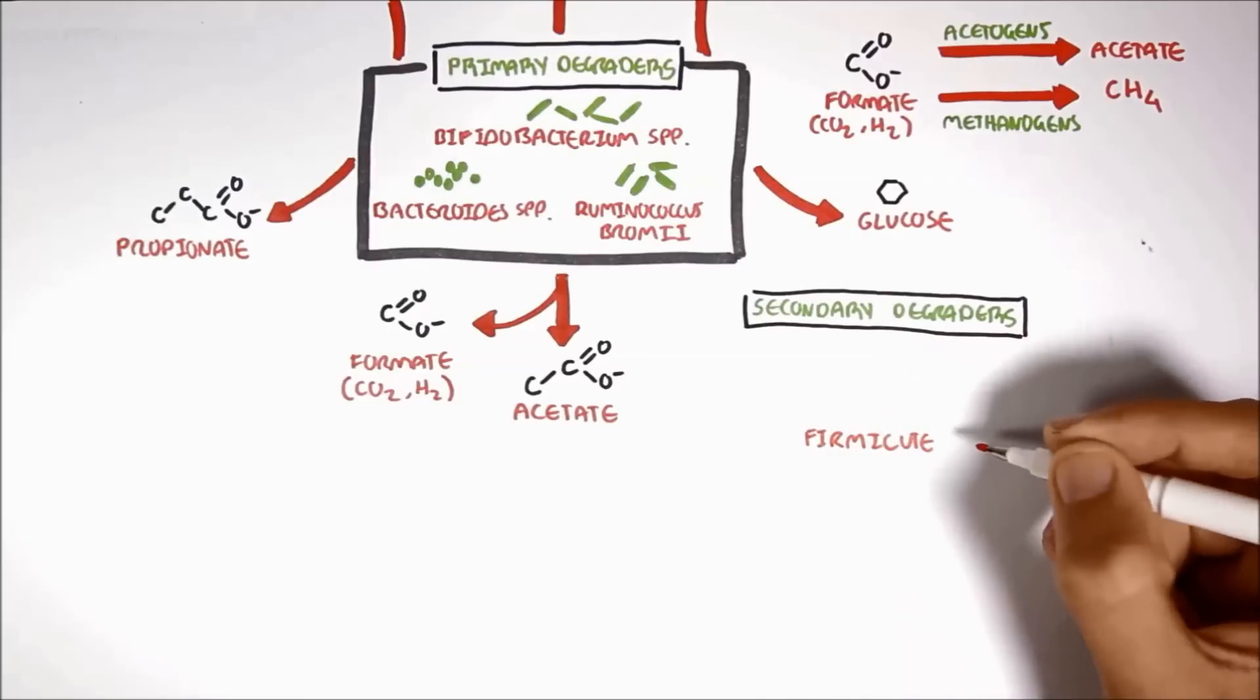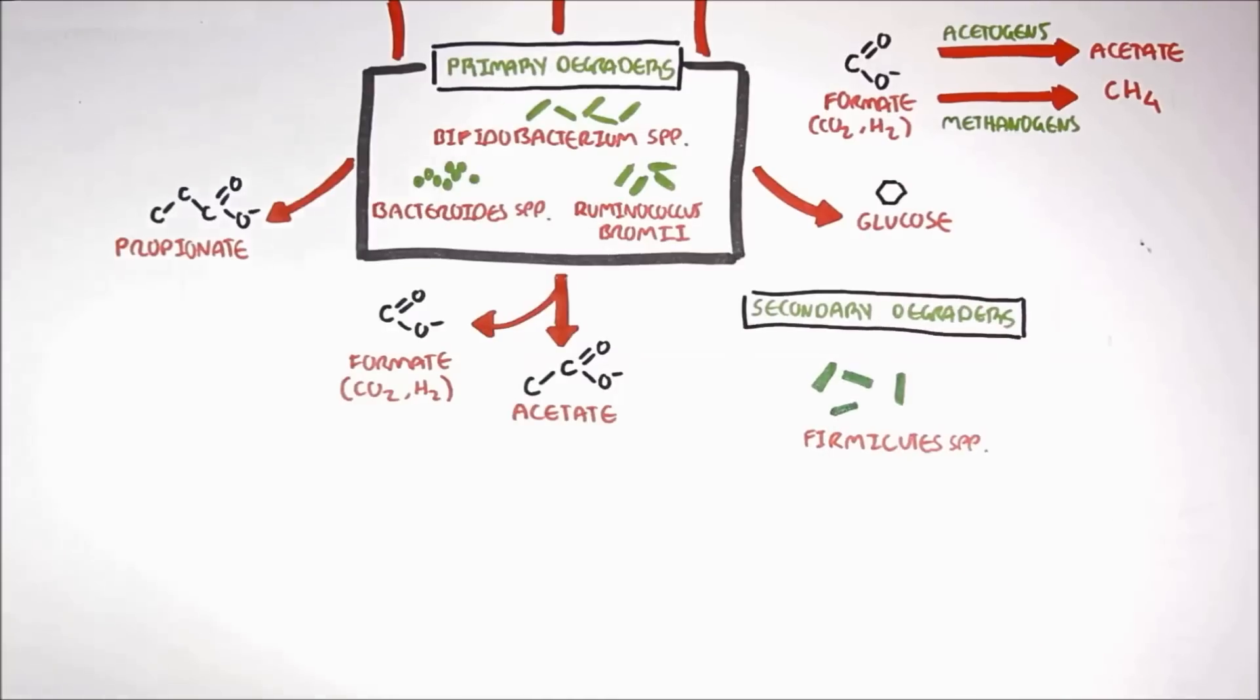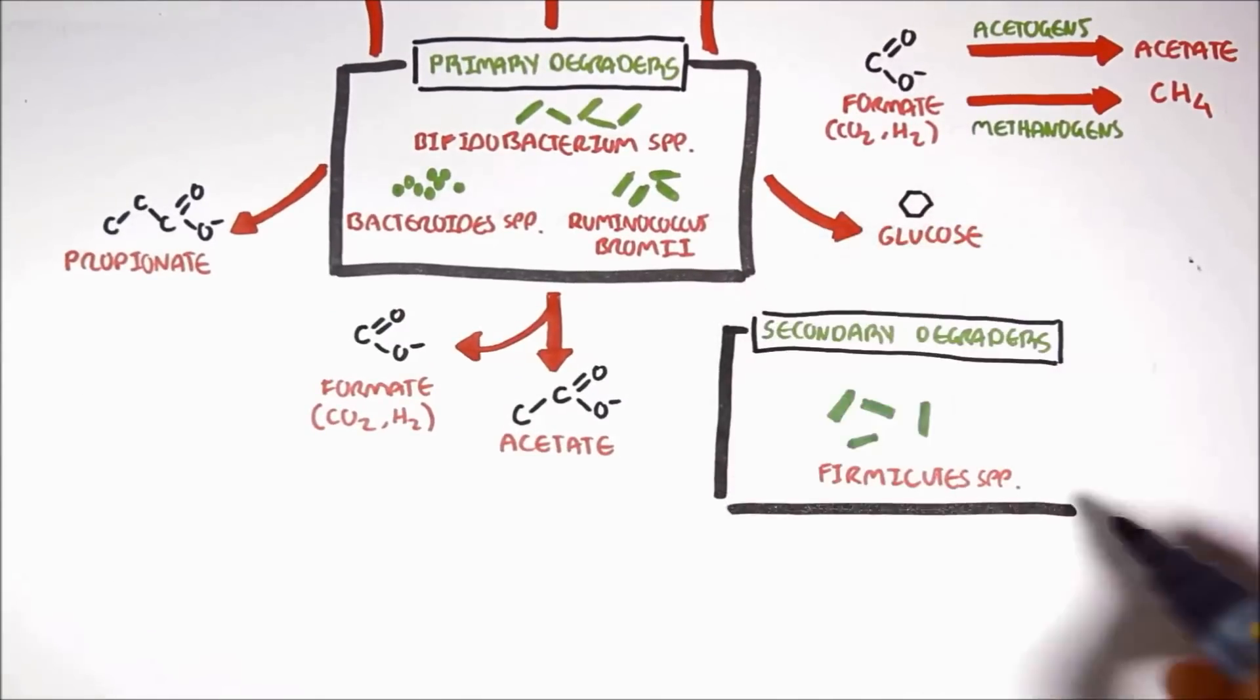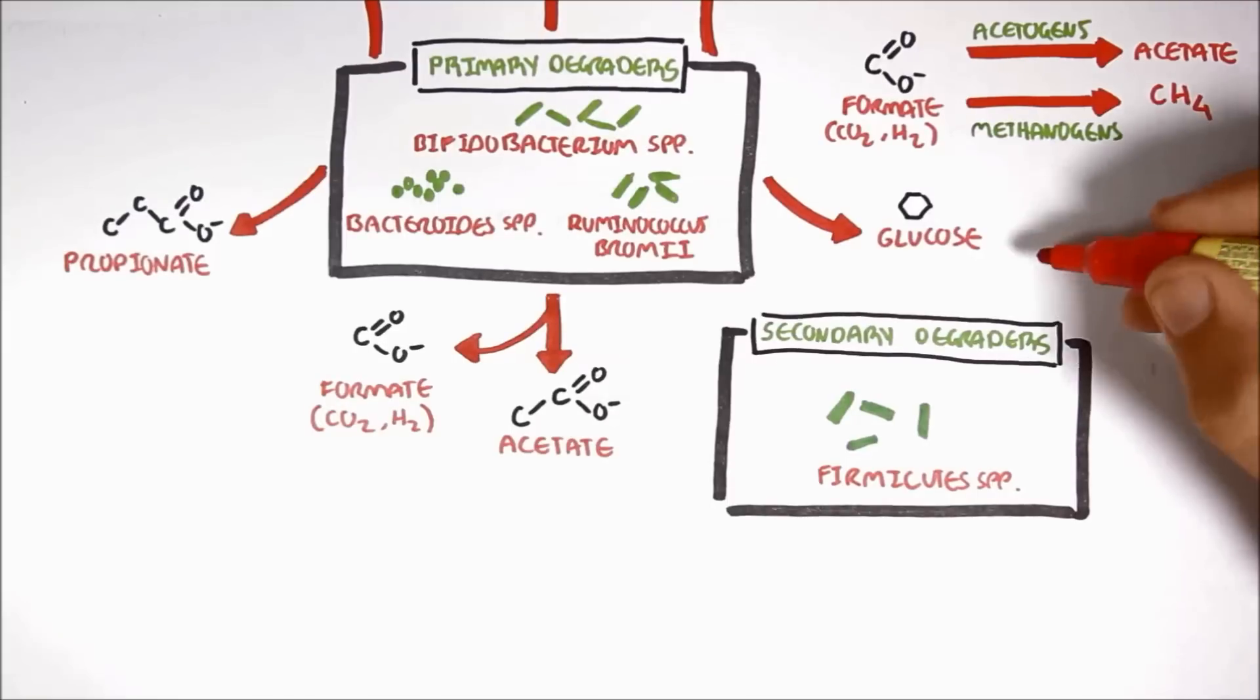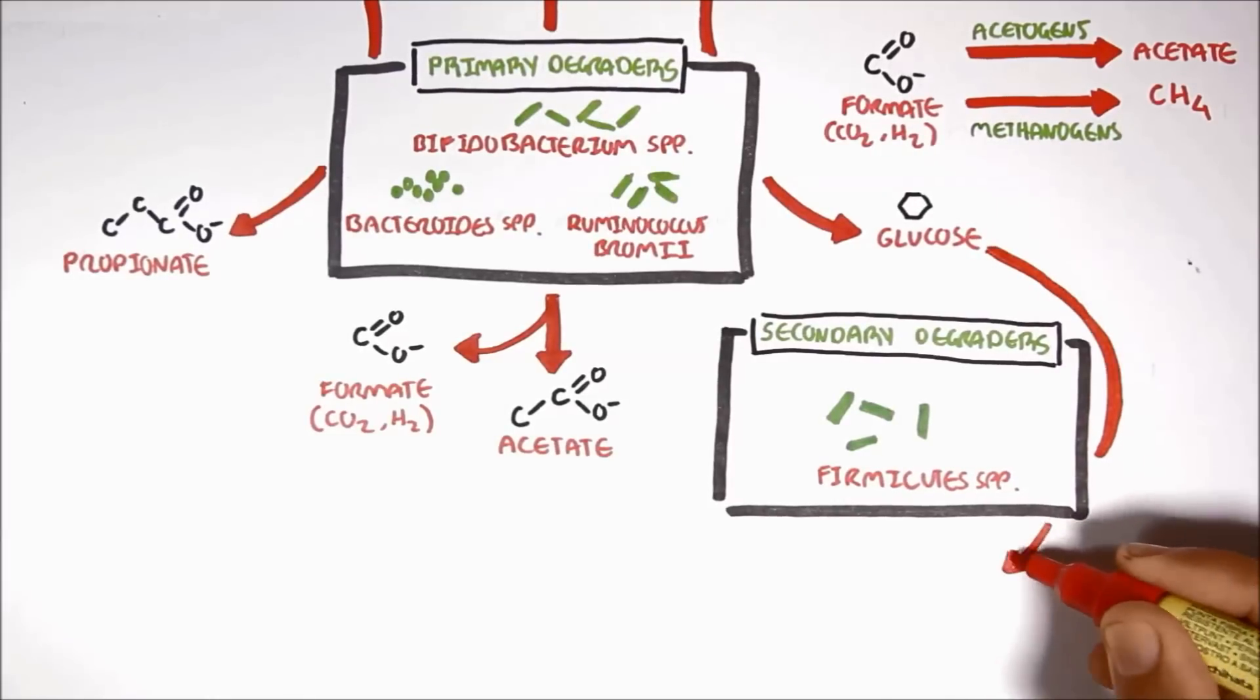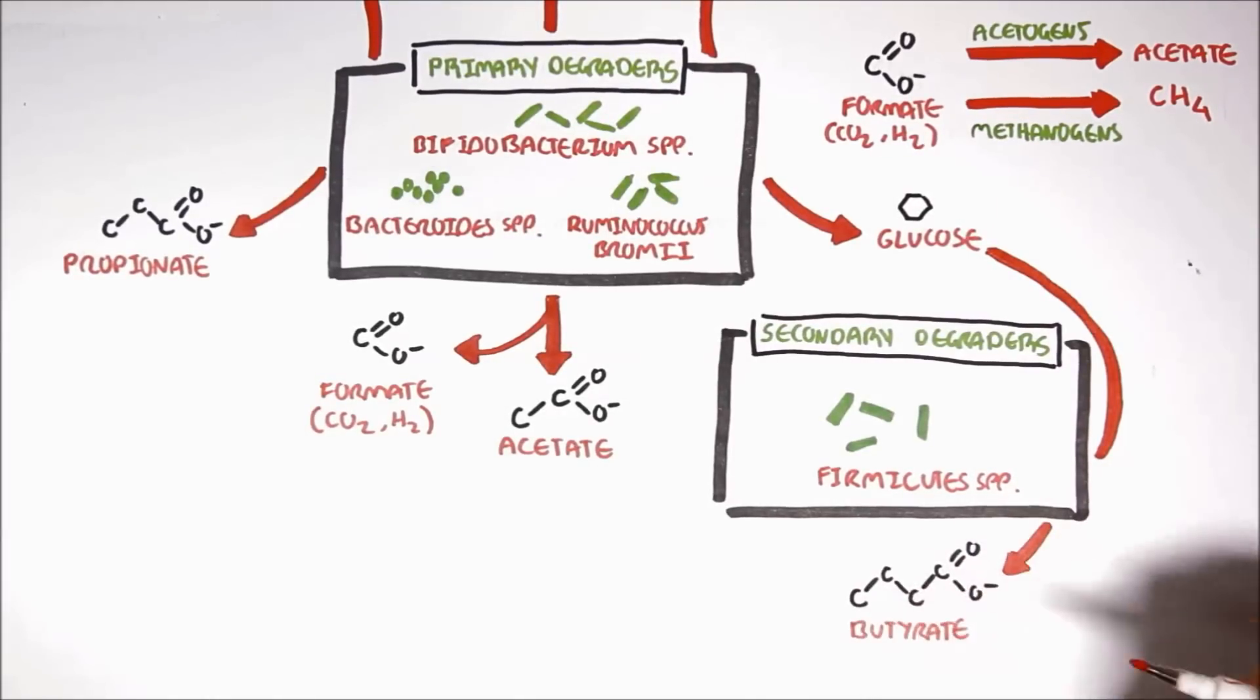And so, the secondary degraders such as the Firmicutes species rely on the primary degraders to release glucose monomers. The Firmicutes species can utilize the glucose and ferment it to produce a 4-carbon short-chain fatty acid called butyrate.